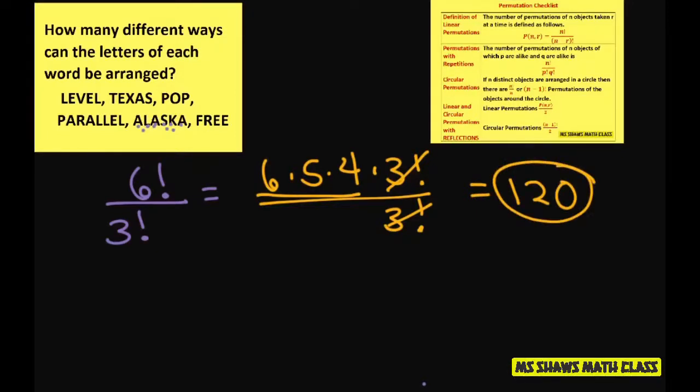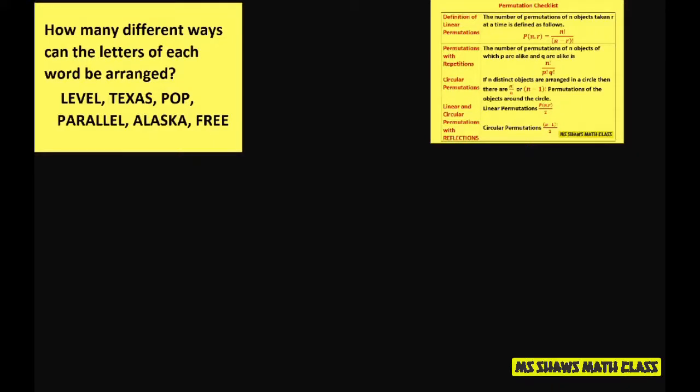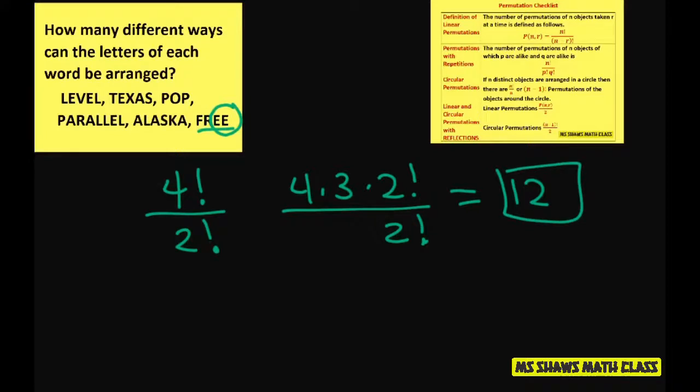And the last one is free. 4 letters, and the E's are repeated, 2. So that's 4 times 3 times 2 factorial divided by 2 factorial, which equals 12 ways the word can be arranged.